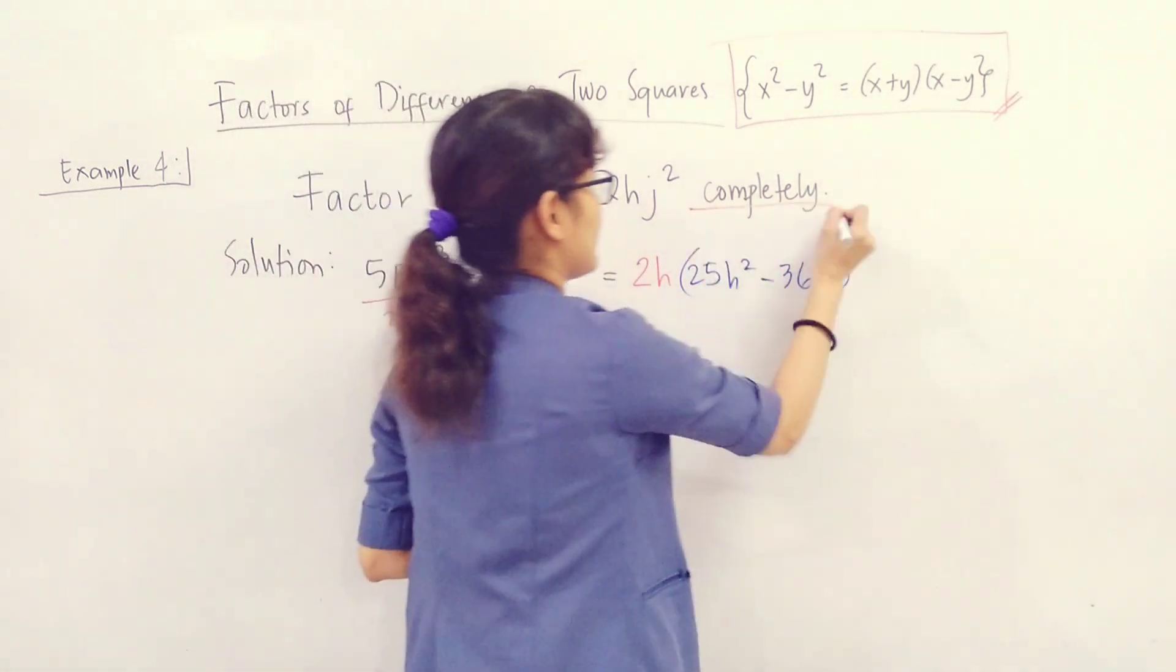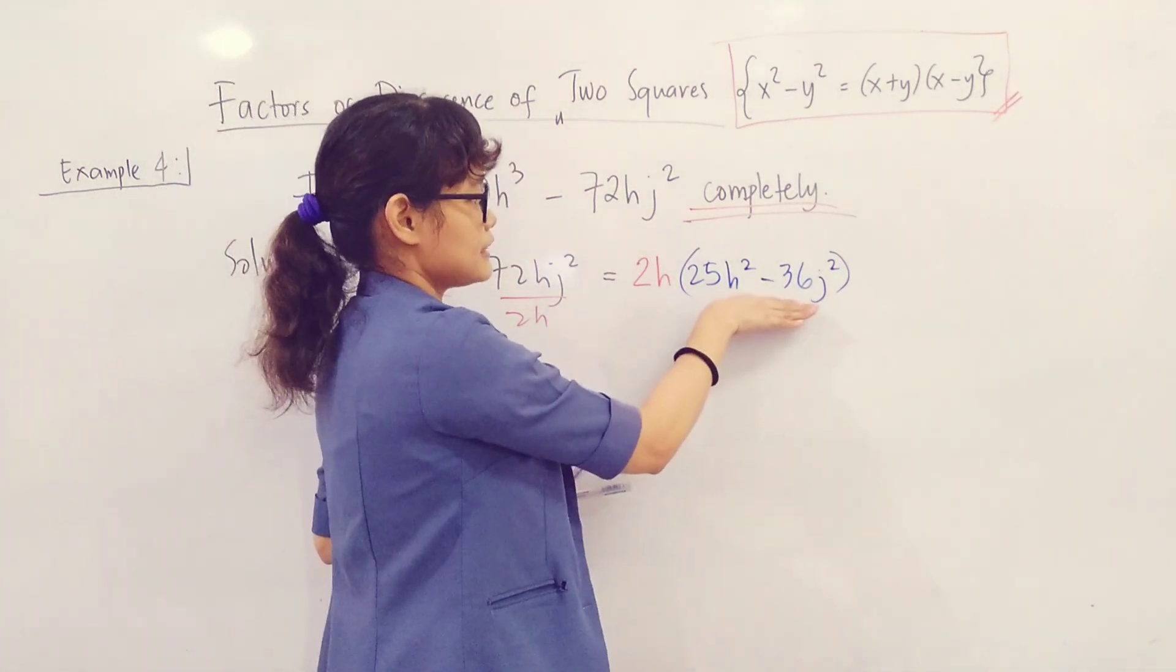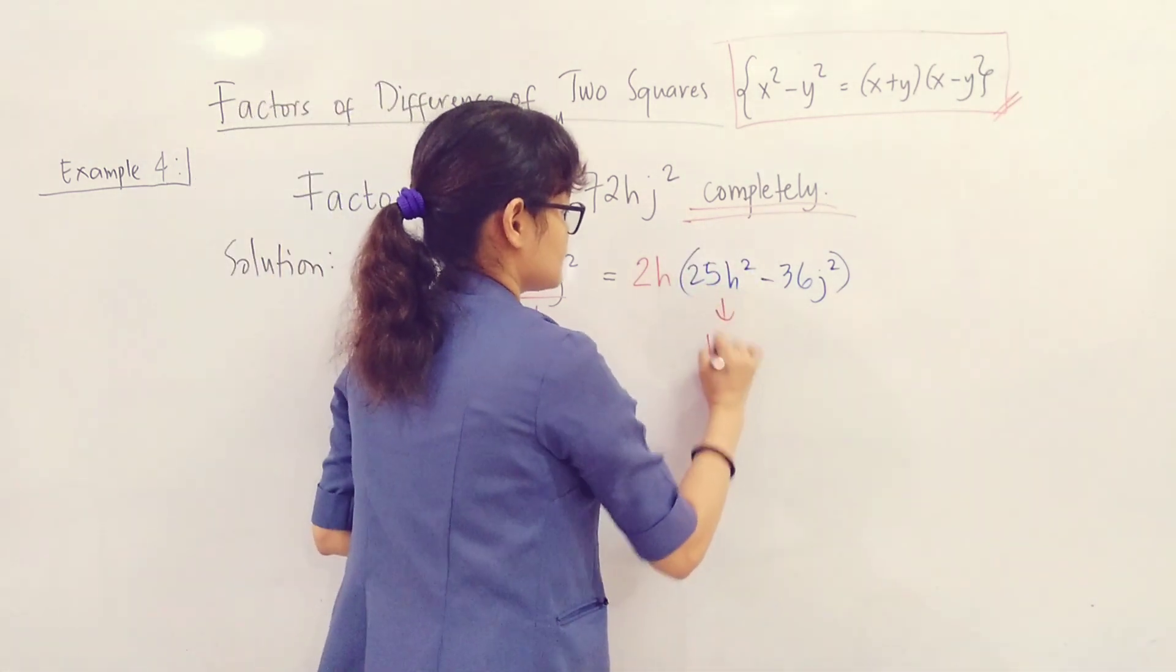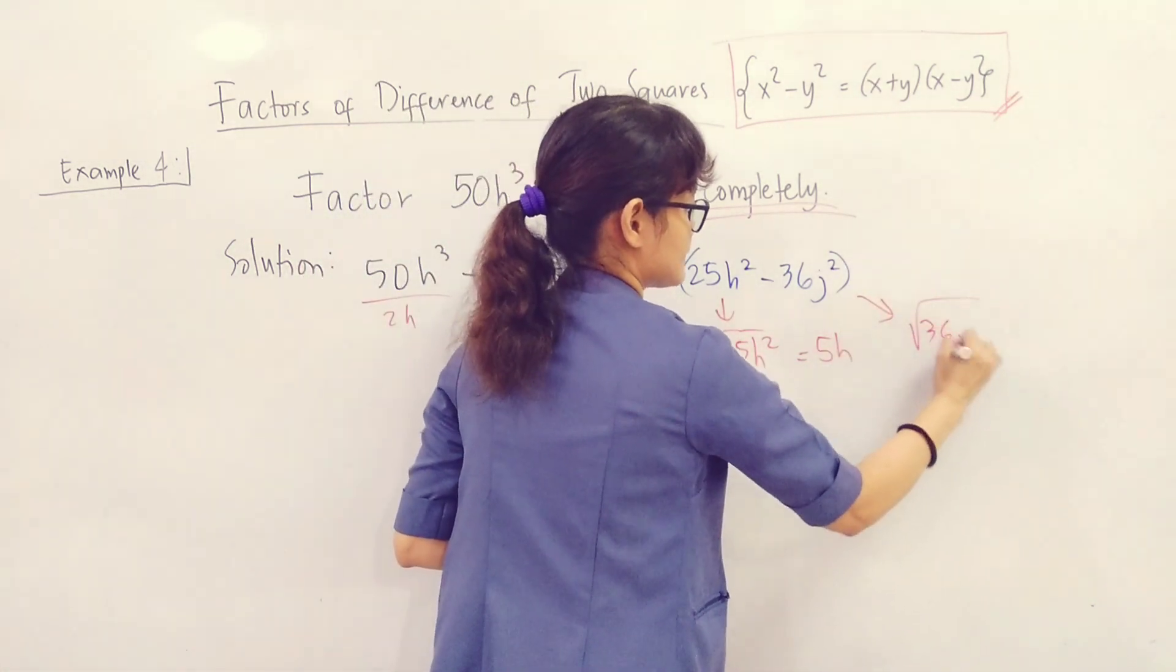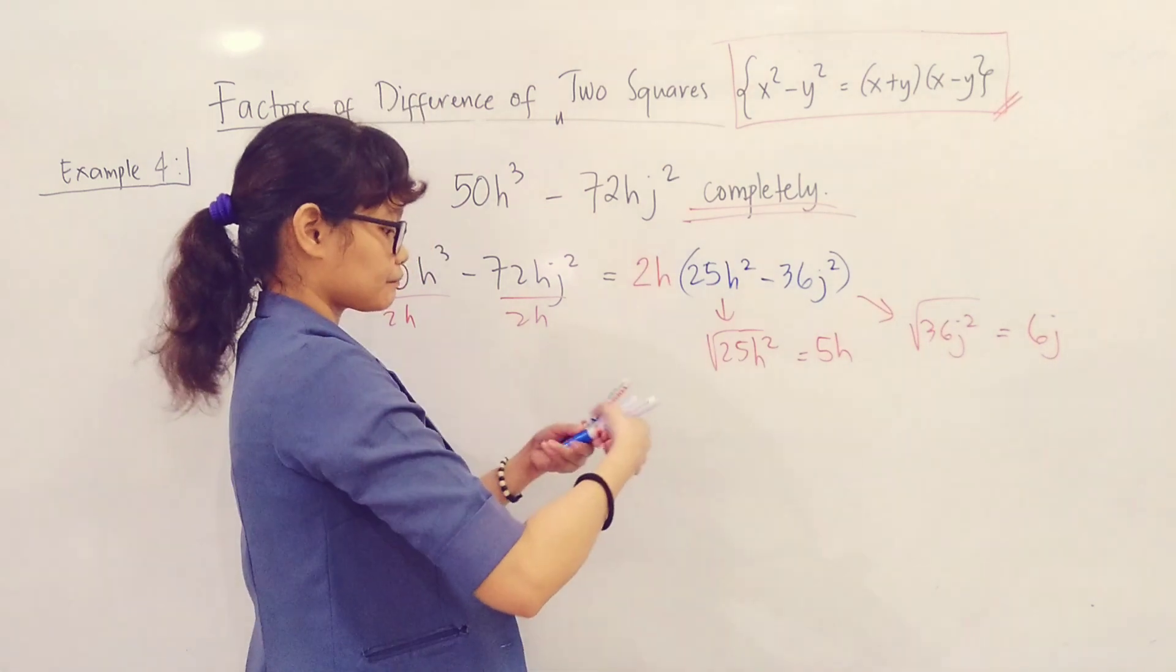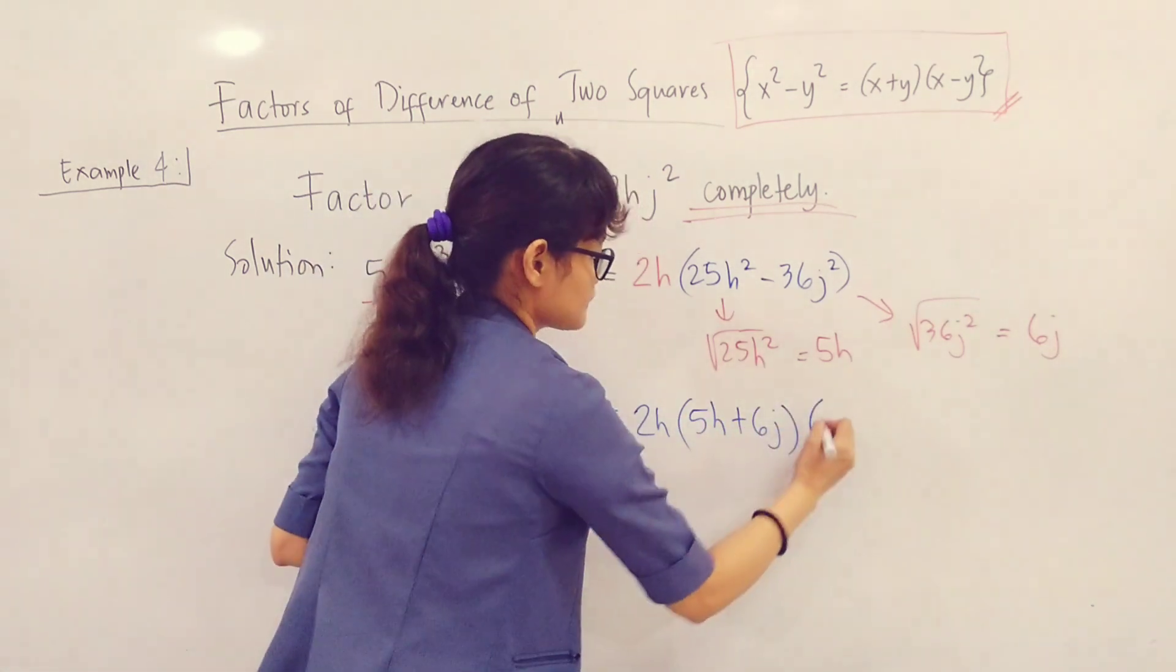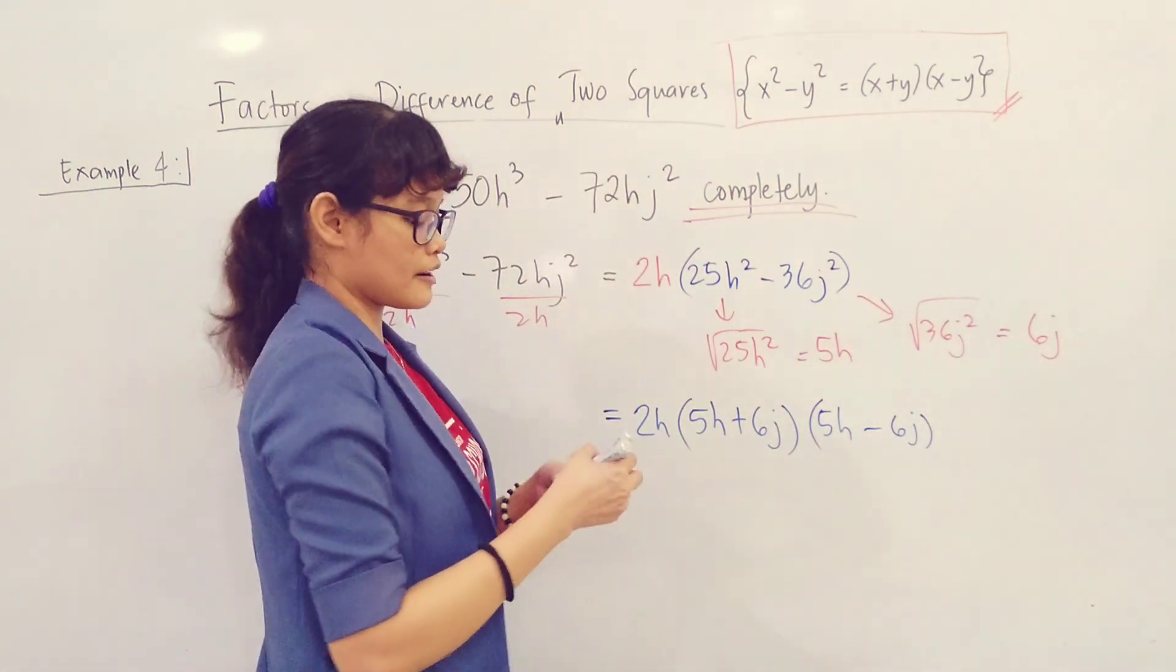However, we have the term 'completely,' so we will not stop here. Notice this binomial is already a DTS. So we can now proceed to the steps on how to factor a DTS. Get the square root. The square root of 25H squared is just equal to 5H. And the square root of 36J squared is equal to 6J. Therefore, our final answer is 2H times 5H plus 6J times 5H minus 6J. And that's our answer.